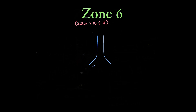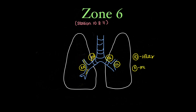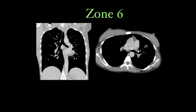Zone 6 is the hilar zone, containing stations 10 and 11. The main bronchi divide into lobar bronchi. Hilar nodes on both sides are labeled 10R and 10L — station 10 being the hilar station. Nodes between the lobar bronchi are 11R and 11L — station 11, the interlobar group, located at the origin of the lobar bronchi. This is confirmed on coronal and axial CT images showing the hilar and interlobar regions.